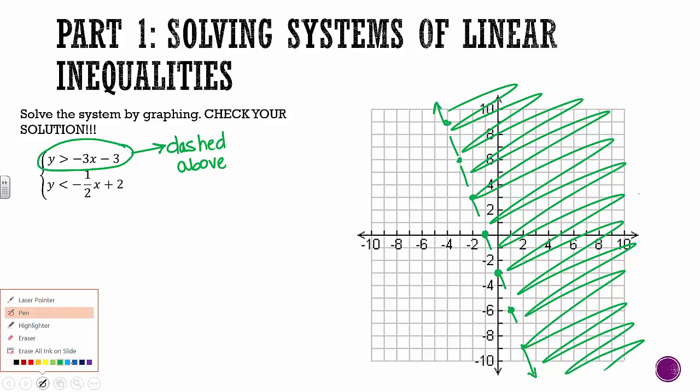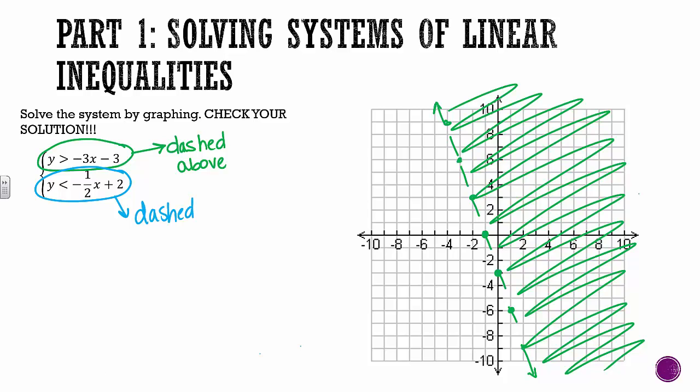And then the next one is also in y equals mx plus b, so I don't need to do anything with that. Again, I'm going to draw a dashed line, but this time I'm going to shade below, because it's a less than symbol.